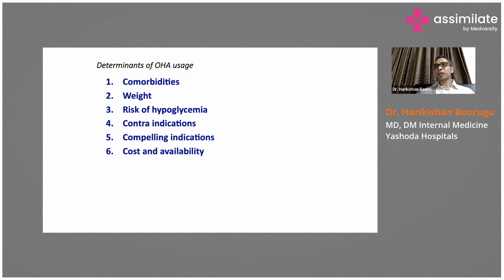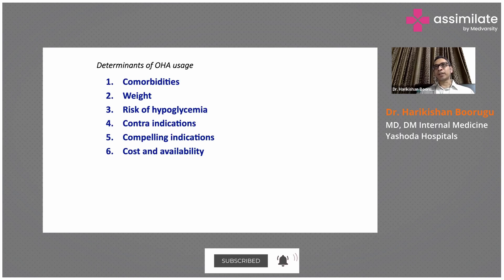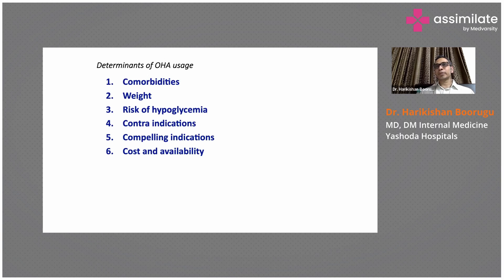If a patient with heart failure develops type 2 diabetes, you can choose an SGLT-2 inhibitor as the first drug. If a patient has coronary artery disease and is on metformin but sugars are not controlled, you can choose GLP-1 agonists over other oral hypoglycemic agents, as GLP-1 agonists have been shown to reduce cardiovascular events. For obese patients, drugs that cause weight loss include GLP-1 agonists, SGLT-2 inhibitors, and metformin.